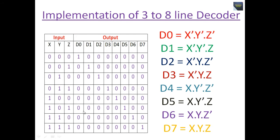This is the implementation of the 3-to-8 line decoder, derived from the truth table. D0 is 1 when X=0, Y=0, and Z=0, so the minterm is X complement · Y complement · Z complement. For D1, the minterm is X complement · Y complement · Z, because Z is 1. Similarly, D2 through D7 follow the same pattern.